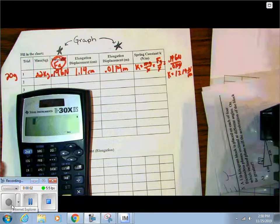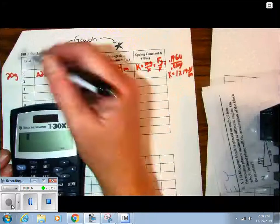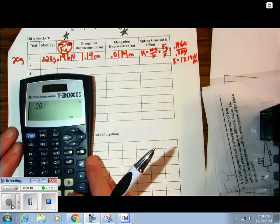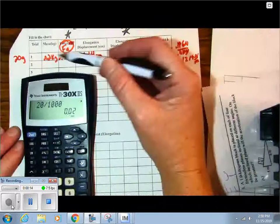Okay, I've never really tried this before, but first I took my 20 grams and I divided it by 1,000 and I got 0.02 kilograms.